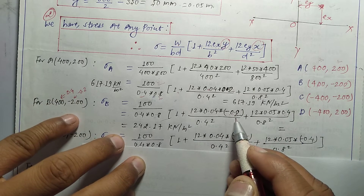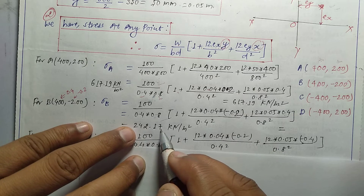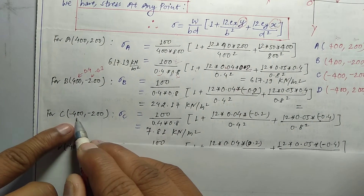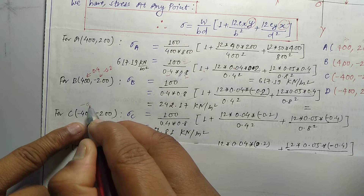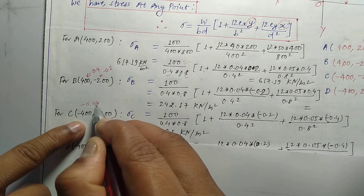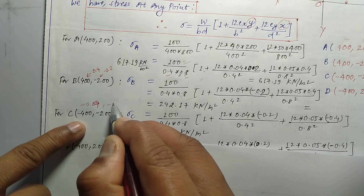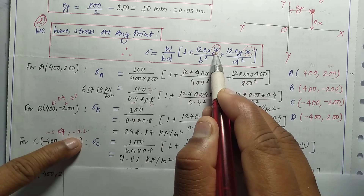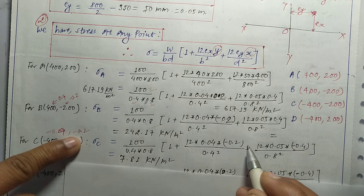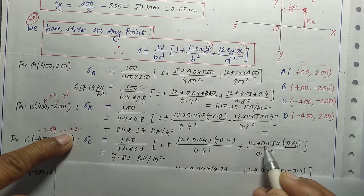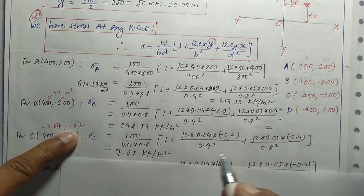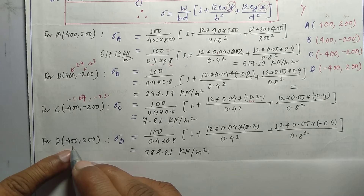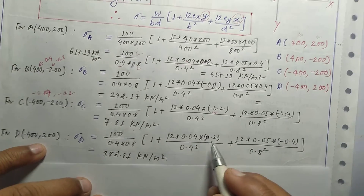The calculations are the same and all the values are the same — we are applying 1 by 3k squared. The value of C is equal to minus 400, minus 200, minus 0.4, minus 0.2. So starting with the formula, the value minus 0.4 and y value minus 0.2 gives us C equal to 7.81. Converting minus 400 and 200 mm to meters gives 0.2.